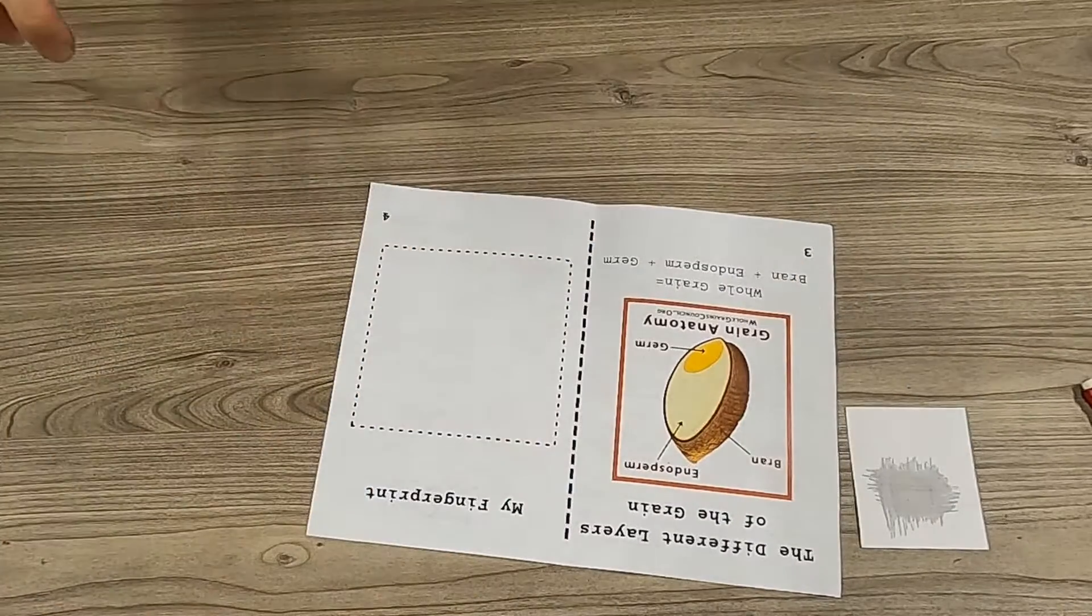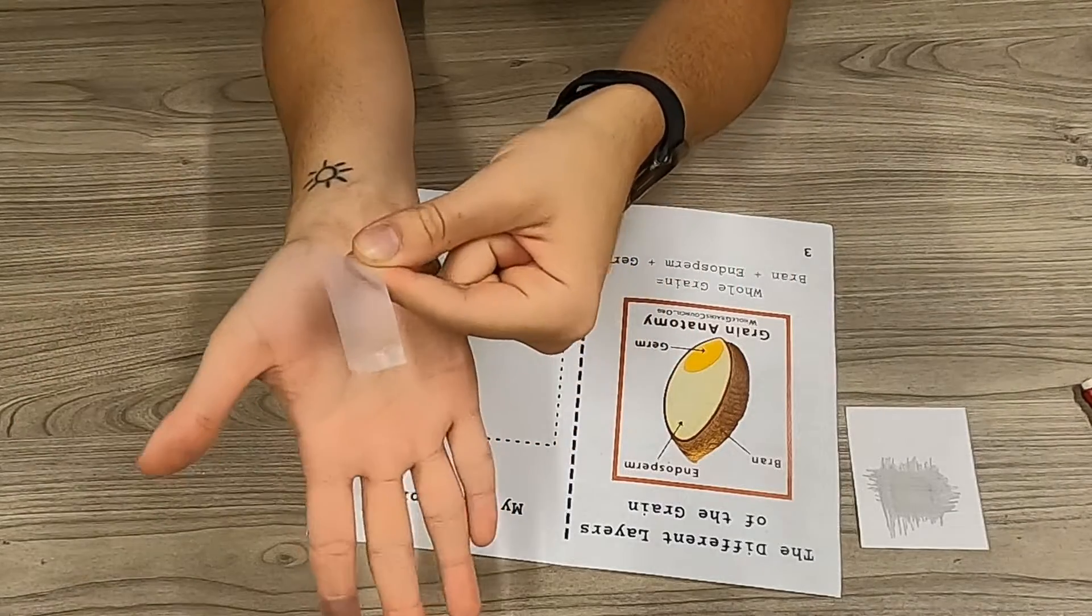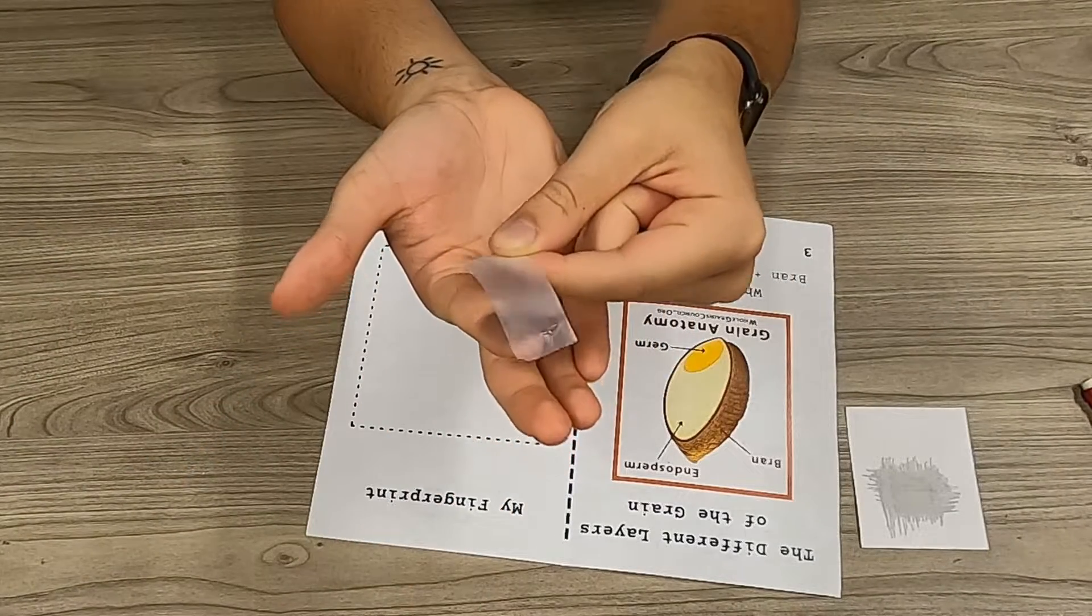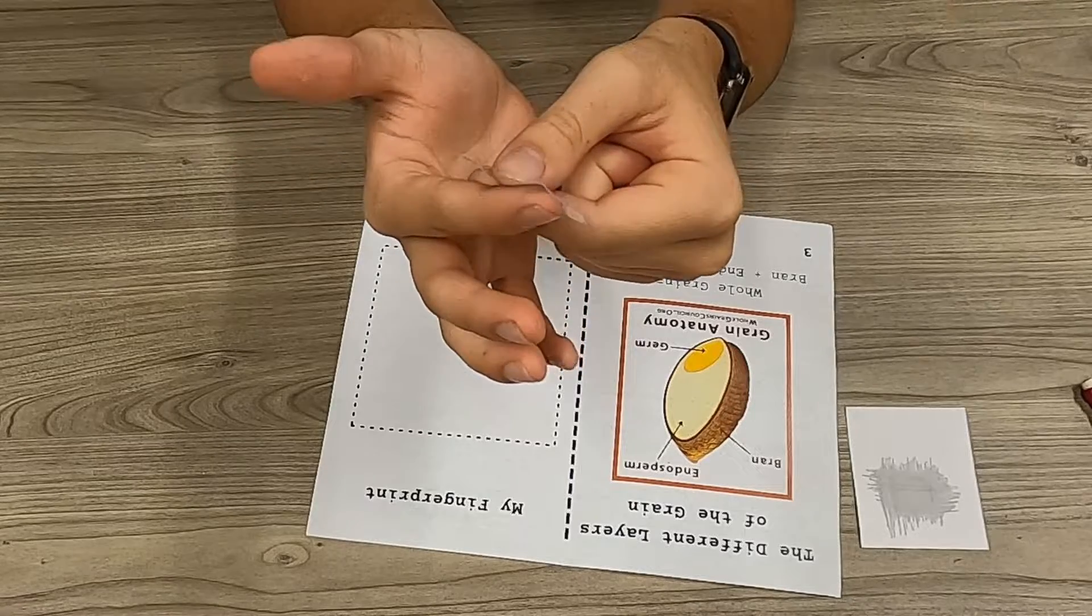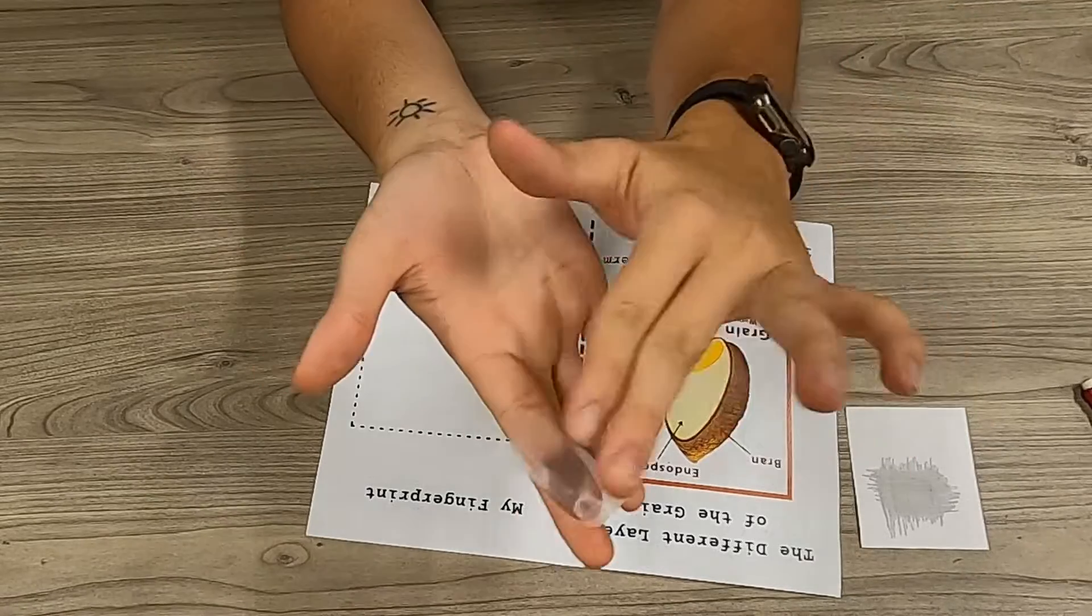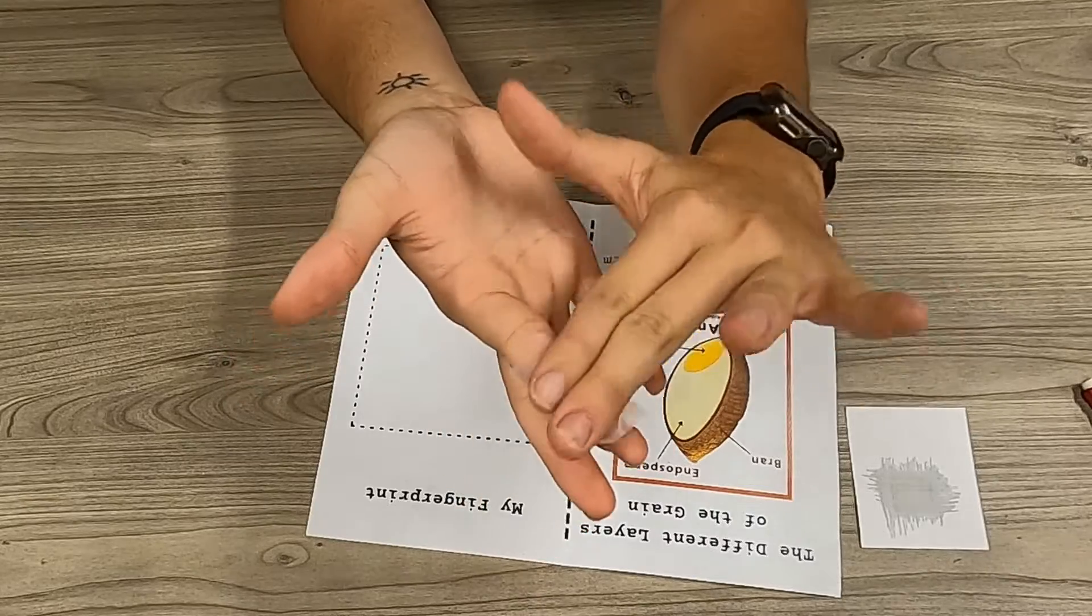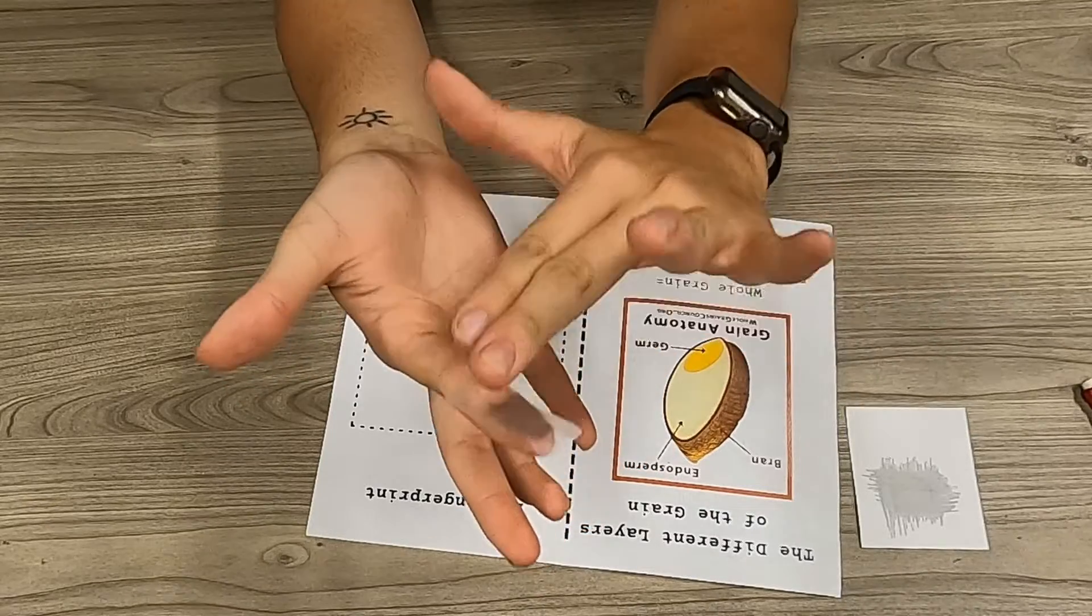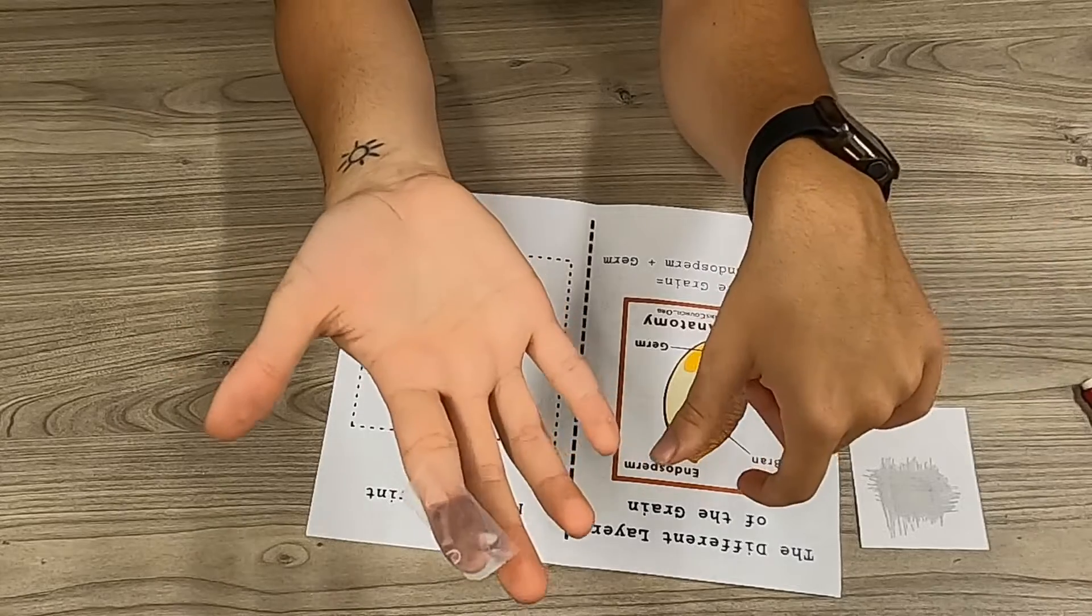You're going to take your tape—just a small piece—and stick it onto the fingerprint. Try to get as close as you can, and then press on your finger to make sure the tape sticks well to your finger.